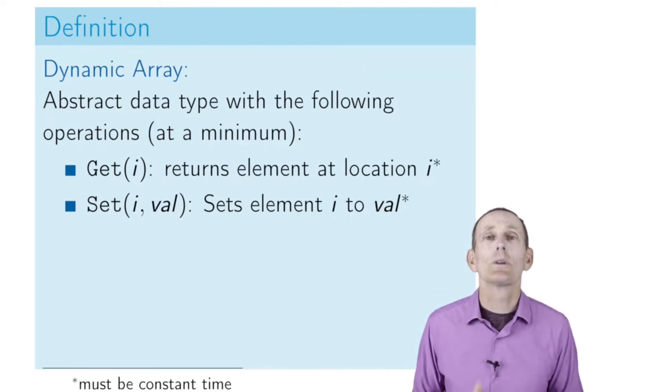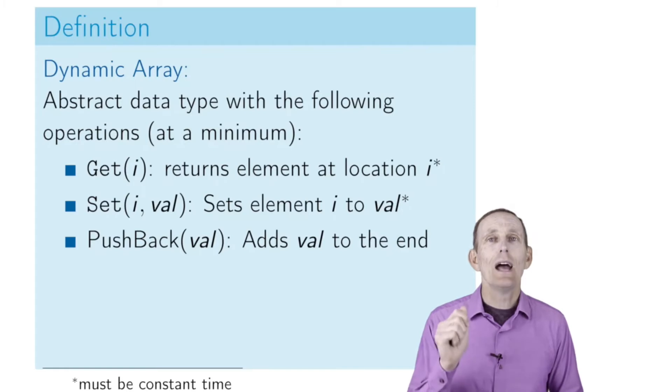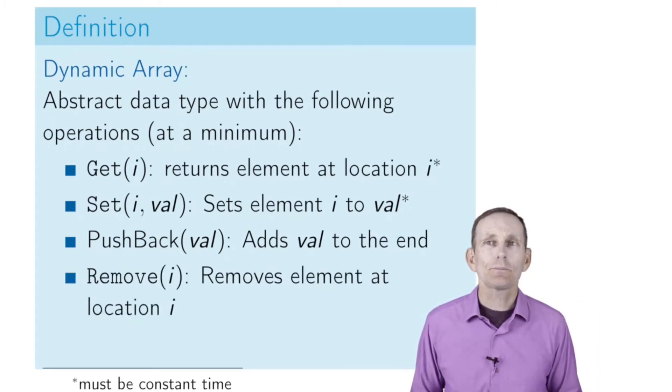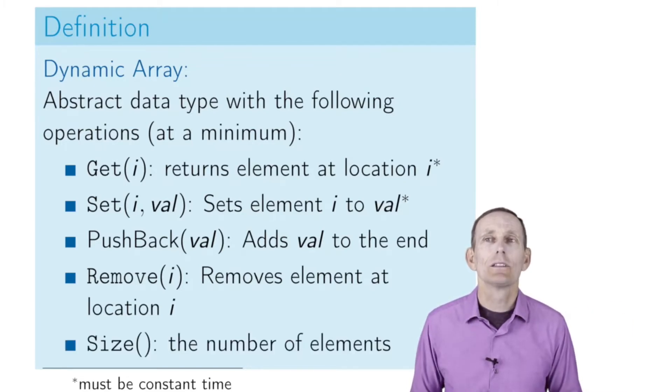We can push back, which adds a new element to the array at the end. We can remove an element at a particular index, which will shuffle down all the succeeding ones. Finally, we can find out how many elements are in the array.